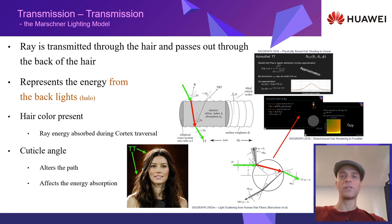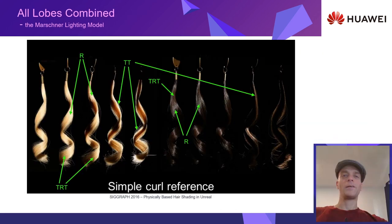Unlike the previous two lobes, TT usually represents light and GI coming from the back. Now that we've covered the Marschner lighting model, we can observe the effect of each lobe in the following reference from EPIC. The R lobe usually appears bright, with light refracted from the front. The TRT lobe presents a darker, rich hair color. The TT lobe presents a bright hair color as thin groups of hair are lit from the back.